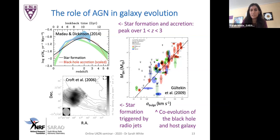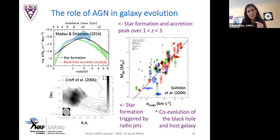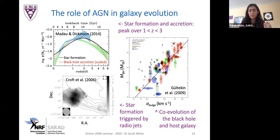There's also a very similar co-evolution thought to exist between the supermassive black hole mass and the velocity dispersion of the bulge, seen for a wide variety of galaxy types over a very wide range in black hole masses. We want to know: are these due to genuine feedback mechanisms, or just a coincidence connected with the amount of gas available in the system?